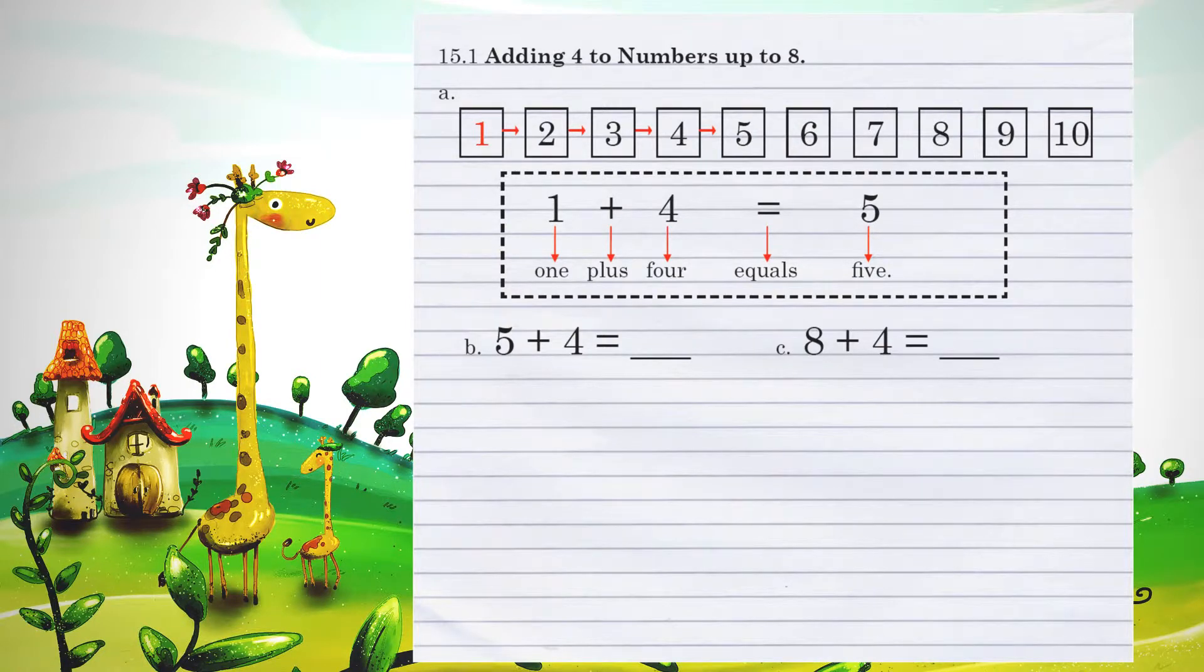Unit 15.1, adding 4 to numbers up to 8, and we have the use of these number blocks to help us with that. If we have 1, and we're going to increase that by 4, which means we are adding 4, you can see how we move 4 spots, and that equals 5.